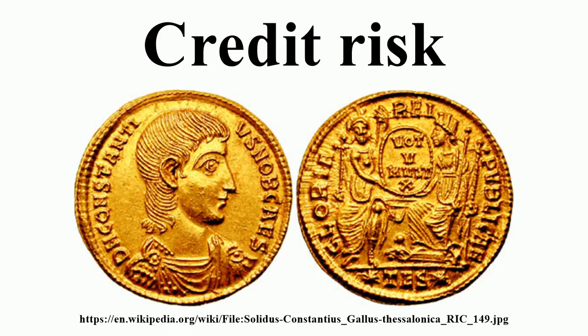An insolvent bank won't return funds to a depositor. A government grants bankruptcy protection to an insolvent consumer or business. To reduce the lender's credit risk, the lender may perform a credit check on the prospective borrower, may require the borrower to take out appropriate insurance such as mortgage insurance, or seek security over some assets of the borrower or a guarantee from a third party. In general, the higher the risk, the higher will be the interest rate that the debtor will be asked to pay on the debt.